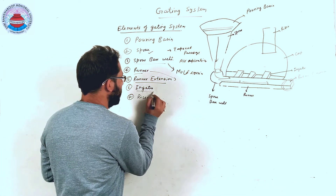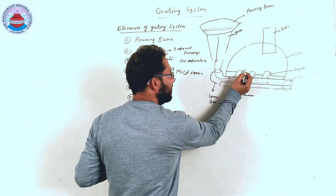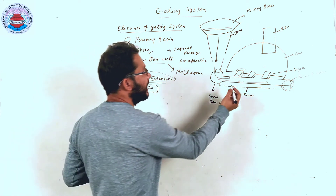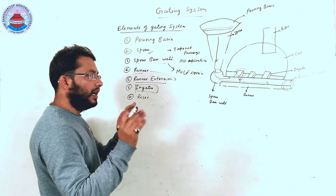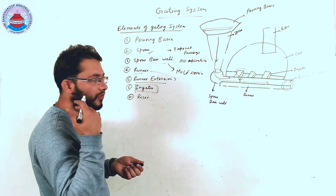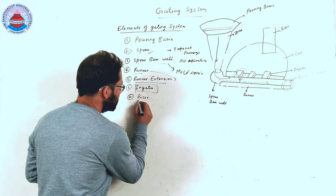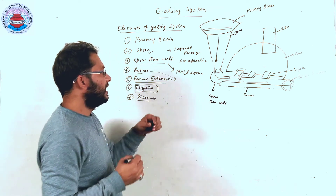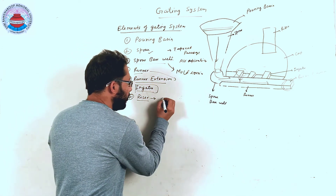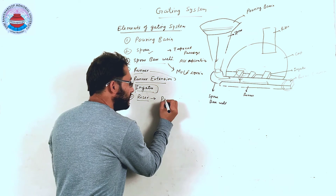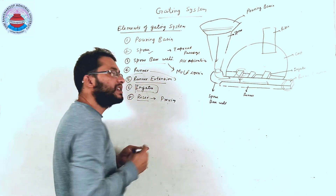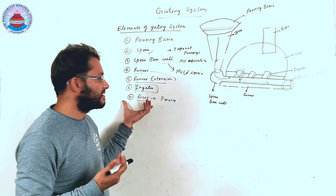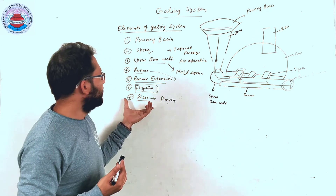The next element is the ingate. The ingate is the last entry point from where molten material enters into the mold cavity from the runner. The last element is the riser. Risers are of various types and are generally used for preventing defects and providing directional solidification of the casting.